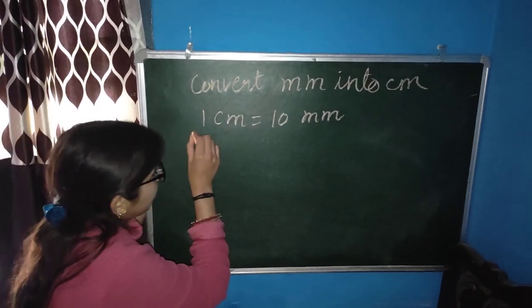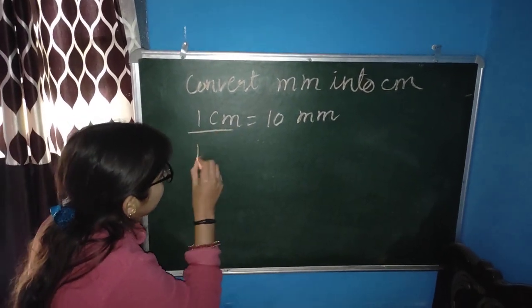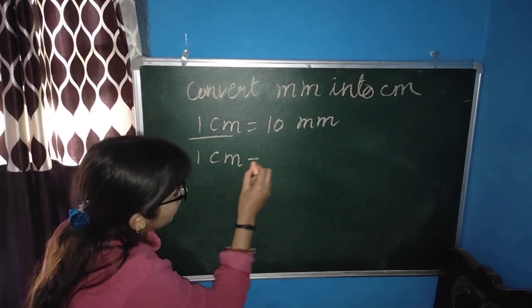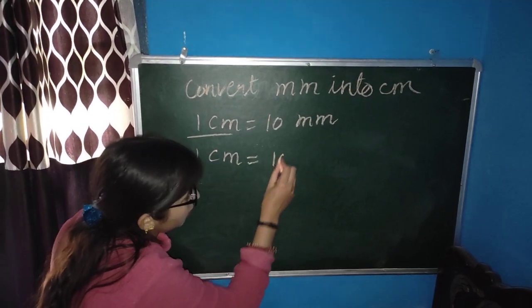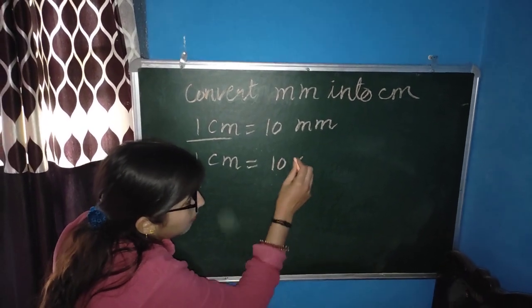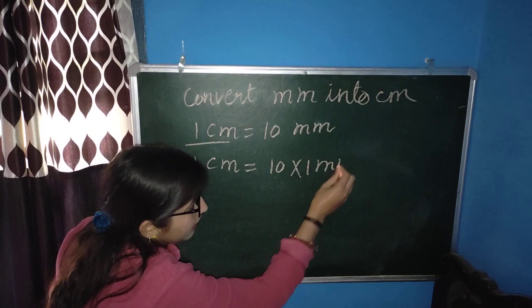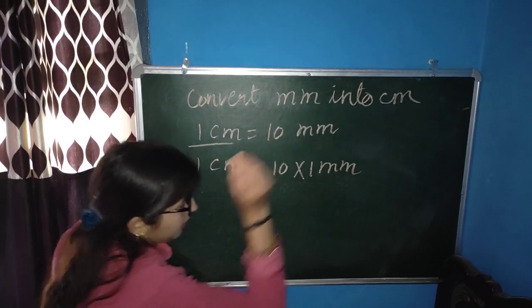So how do we find out how many centimeters are in 1 millimeter? We know that 1 centimeter is equal to 10 multiplied by 1 millimeter.